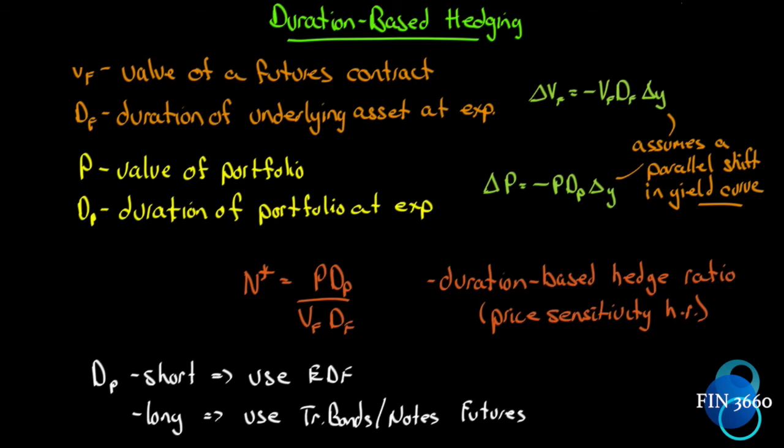Let's have a look. We need some terminology: V sub F is the value of a futures contract, D sub F is the duration of the underlying asset of this futures contract at expiration, P is the value of the portfolio that we're hedging. We can see right away that P divided by VF will give us a rough estimate of the number of contracts we need to hedge this out.